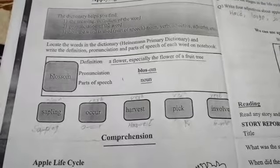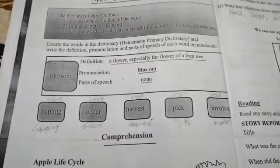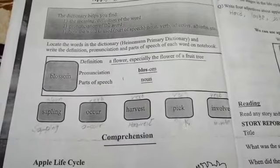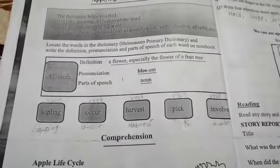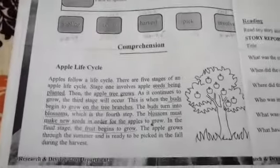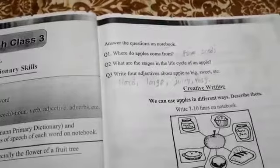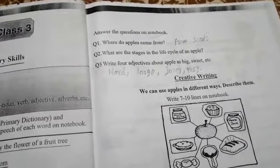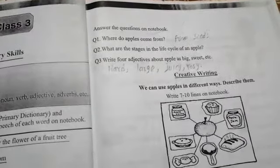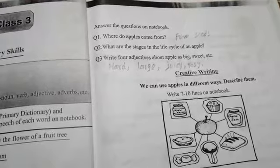For 'sapling': noun. Occur — verb. Harvest — verb. Pick — verb. Involve — verb. The next question is comprehension. The question is: where do apples come from? Apples come from seeds. What are the stages in the life cycle of an apple?